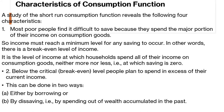Let's understand the characteristic features of the consumption function. First of all, most poor people find it very difficult to save because they spend the major portion of their income on consumption goods. Whatever they receive is only enough to satisfy their necessities, so they cannot save a part of their income. Income must reach a minimum level for any saving to occur. In other words, there is a break-even level of income — it is the level at which households spend all their income on consumption goods, neither more nor less. At this point, saving is zero.